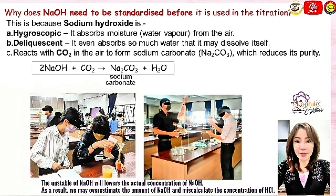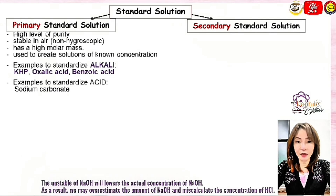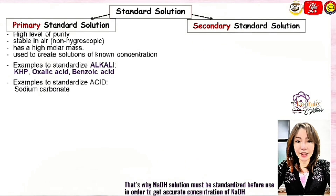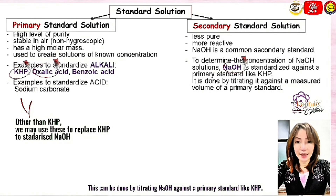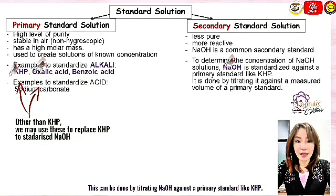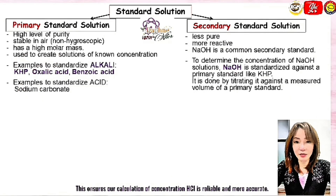As a result, we may overestimate the amount of NaOH and miscalculate the concentration of HCl. That's why NaOH solution needs to be standardized before use. This can be done by titrating NaOH with a primary standard like KHP, ensuring our calculation of the concentration of HCl is more reliable and accurate.